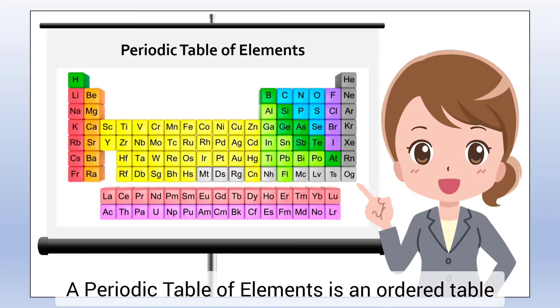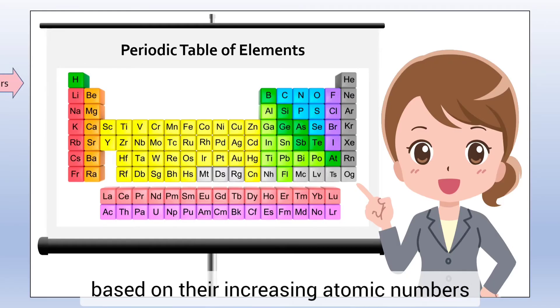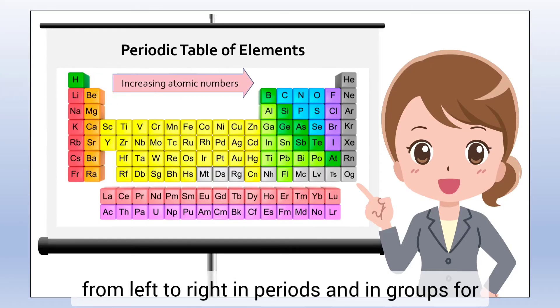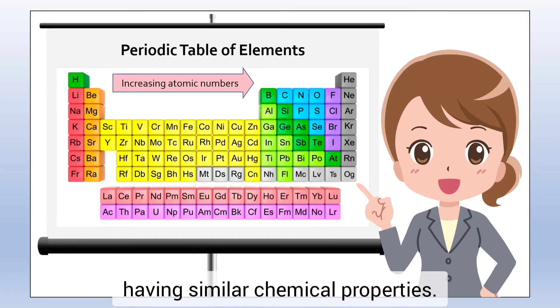A periodic table of elements is an ordered table based on their increasing atomic numbers from left to right in periods and in groups for having similar chemical properties.